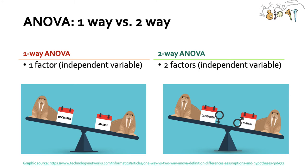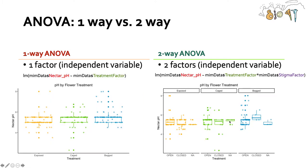Comparing one-way and two-way ANOVA: one-way ANOVA is when you have one factor or one independent variable. Two-way ANOVA is when you have two factors or two independent variables, and you want to know the relative contribution of each individual independent variable and their interaction to the continuous variable of interest. In our one-way ANOVA we compared nectar pH between the exposed, caged, and bagged treatments. In a two-way ANOVA, the y is still nectar pH, but we're comparing both treatment and stigma status — open or closed — all in one model.